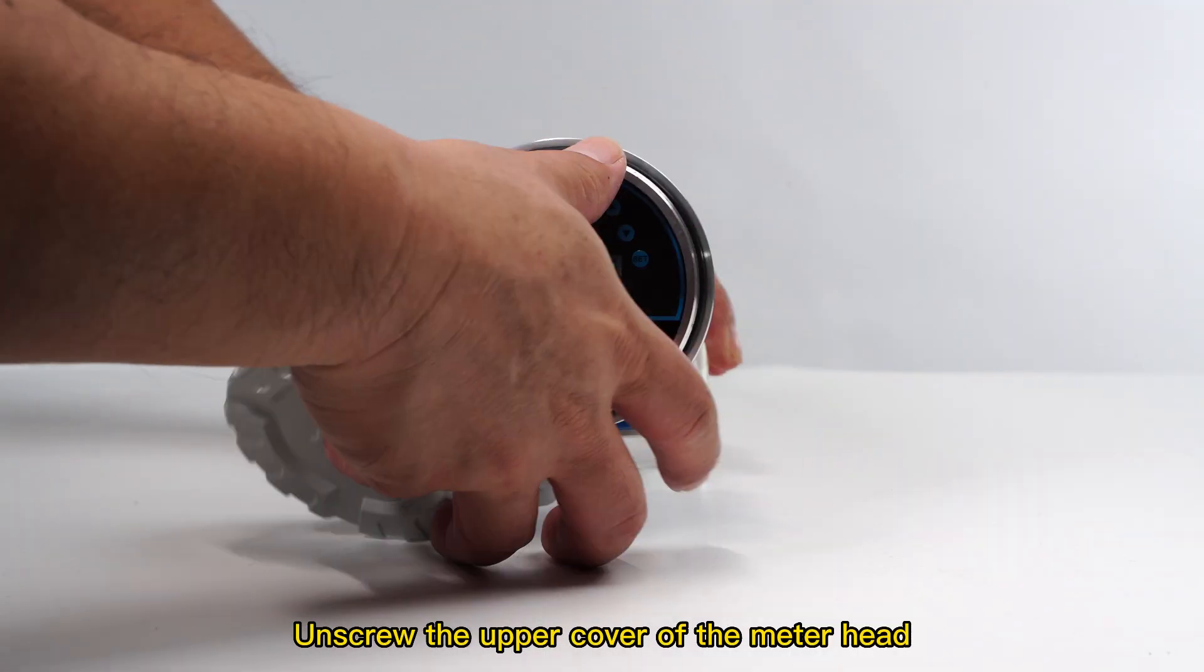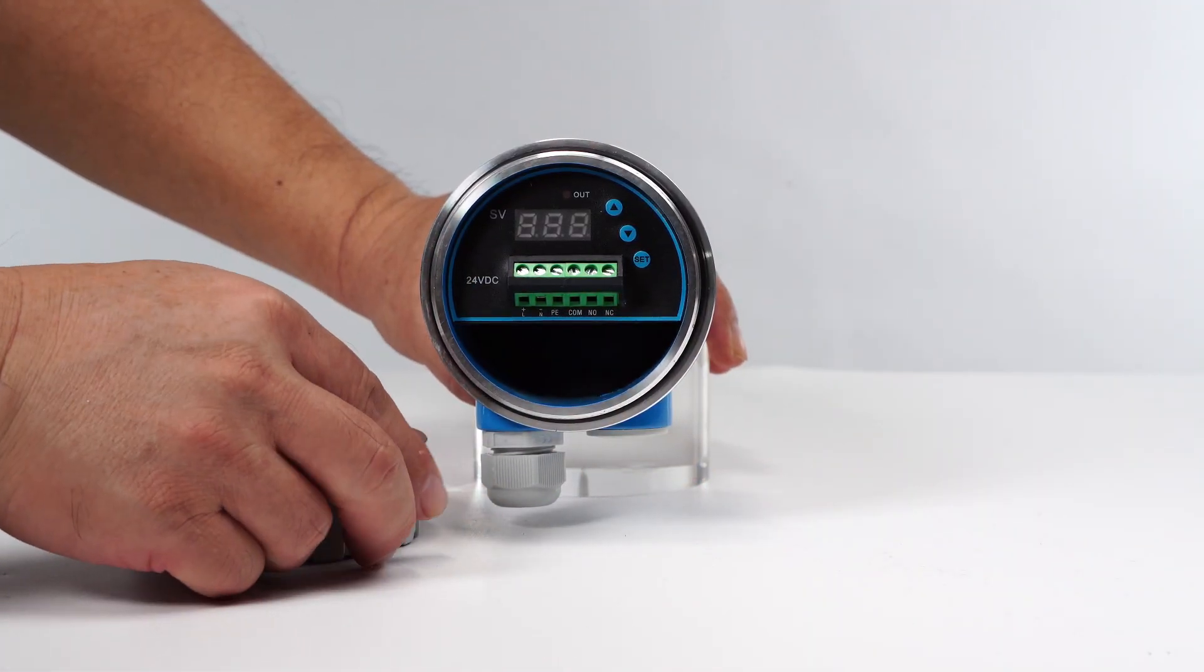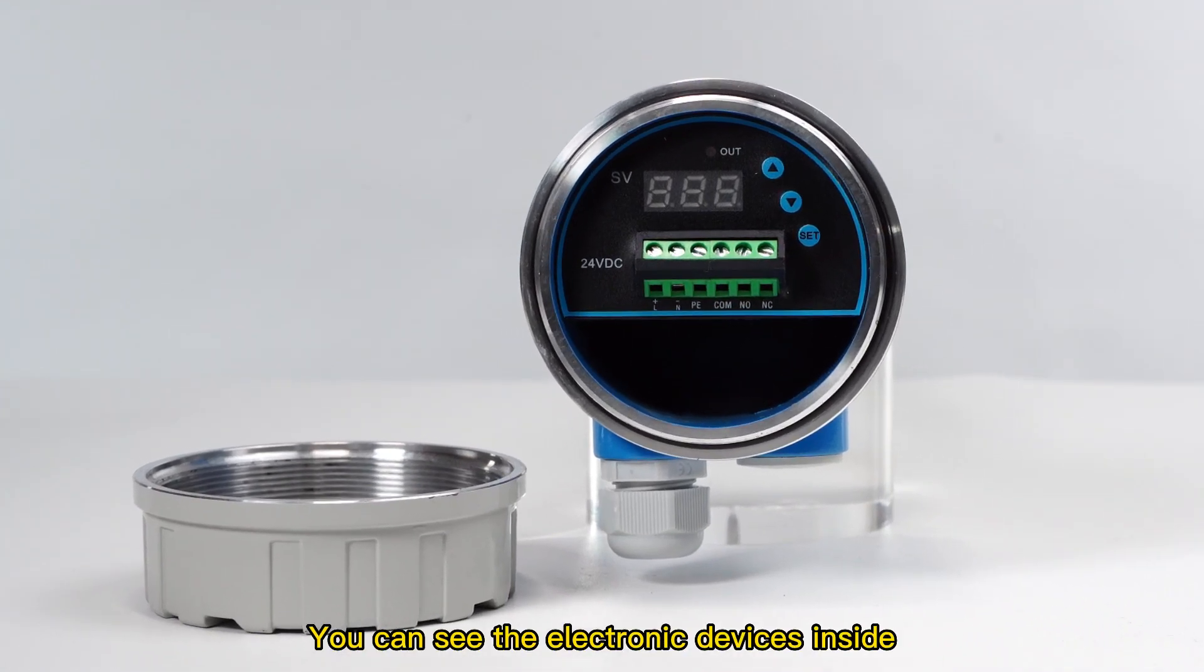Unscrew the upper cover of the meter head. You can see the electronic devices inside.